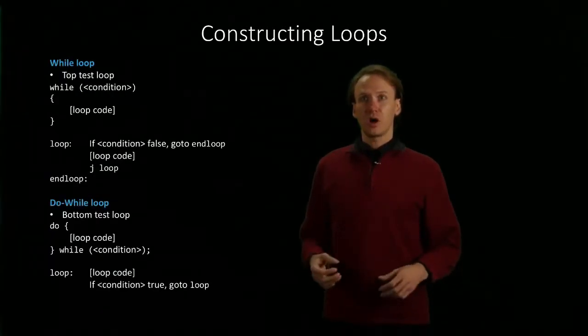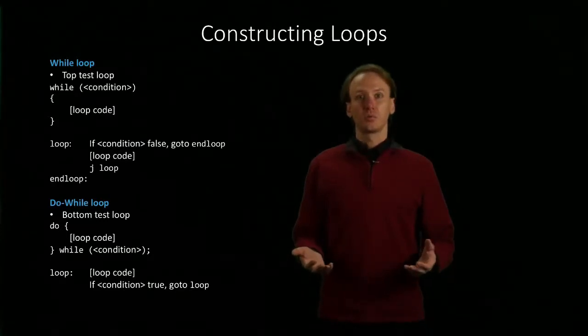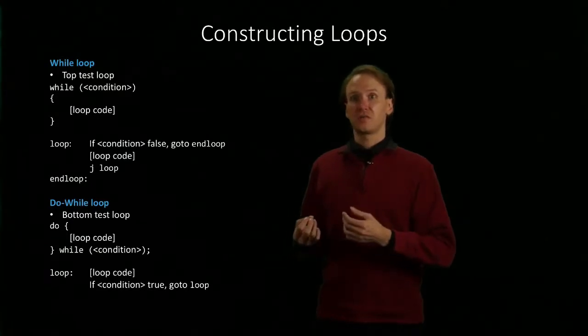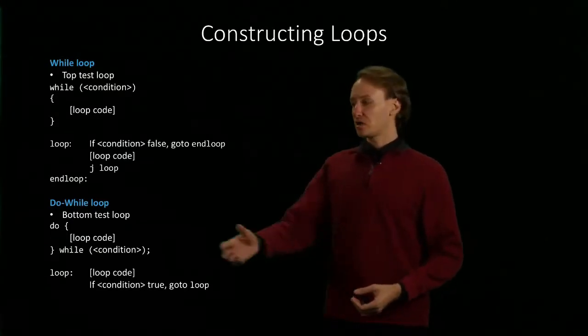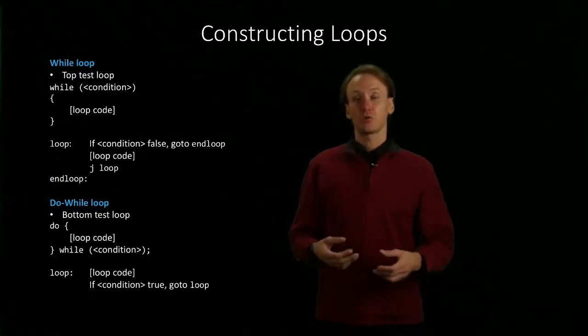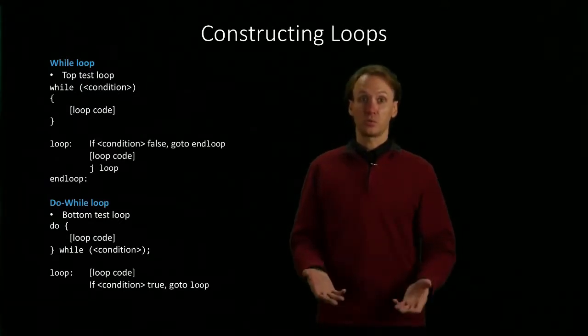Our while loop is a top test loop, which means we test our condition at the beginning of the loop instead of at the end. This is in contrast to the do-while loop, which is a bottom test loop that only tests the condition after it's run the loop code at least once.